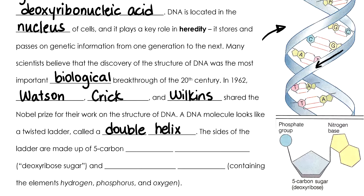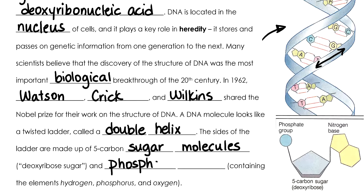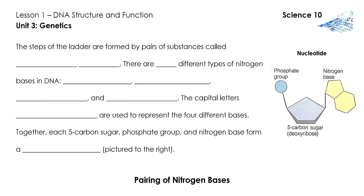The sides of the ladder — these parts right here — are made up of five-carbon sugar molecules called the deoxyribose sugar and phosphate groups, which contain hydrogen, phosphorus, and oxygen. The rung part of the ladder is made of something different. The rungs or steps of this ladder formation are formed by pairs of substances called nitrogen bases.